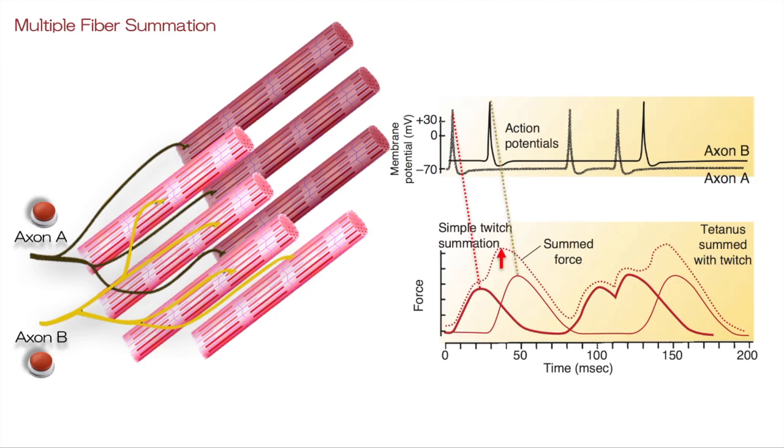These two together can have this summation effect and create a greater contraction. As unit A contracts and unit B adds another contraction, it can be the single motor summation plus the summation as multiple fiber, which creates an even larger force by the whole muscle.